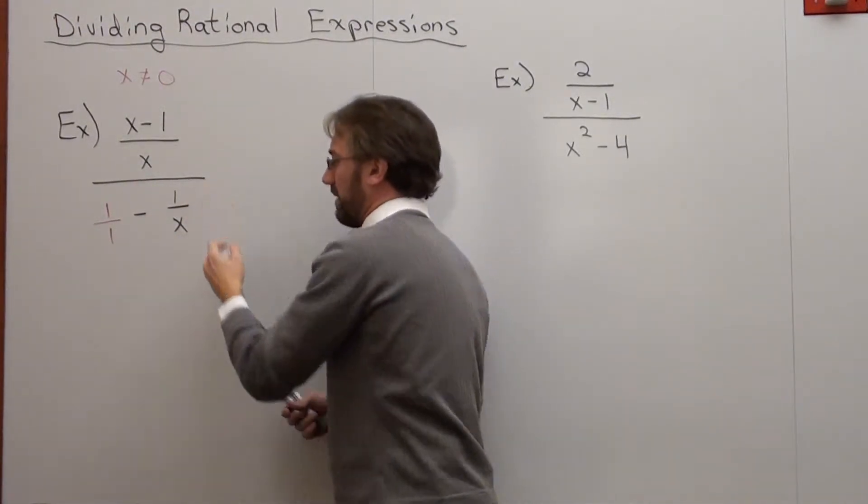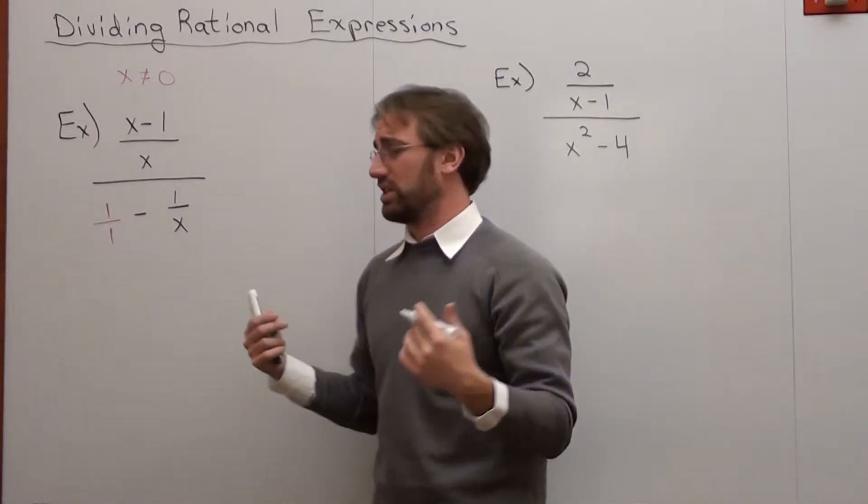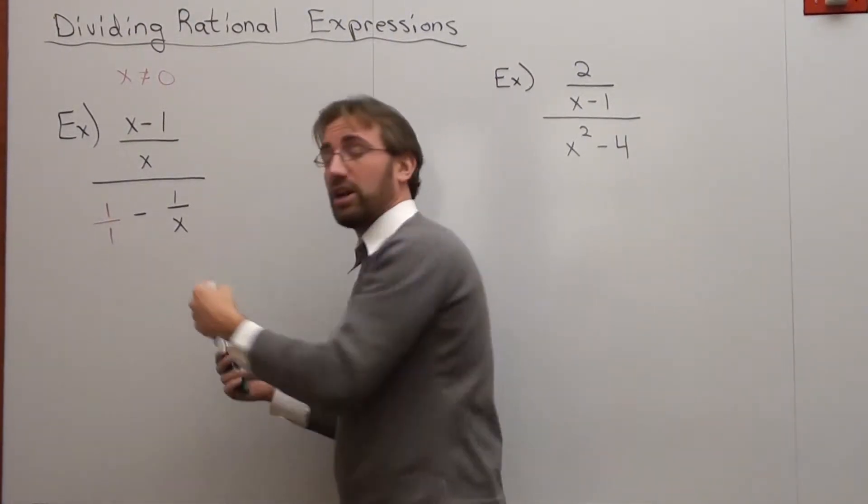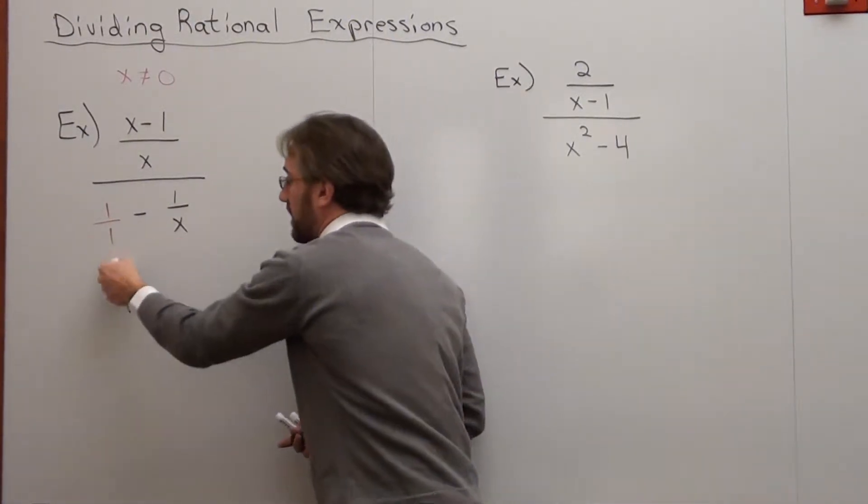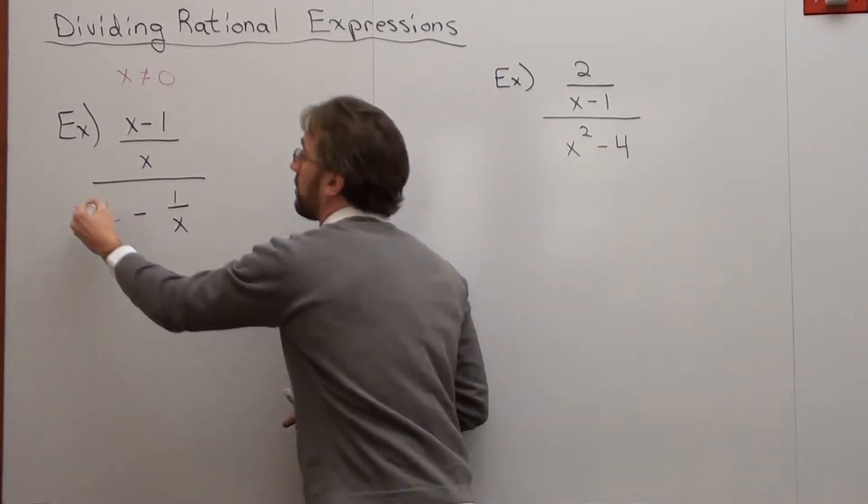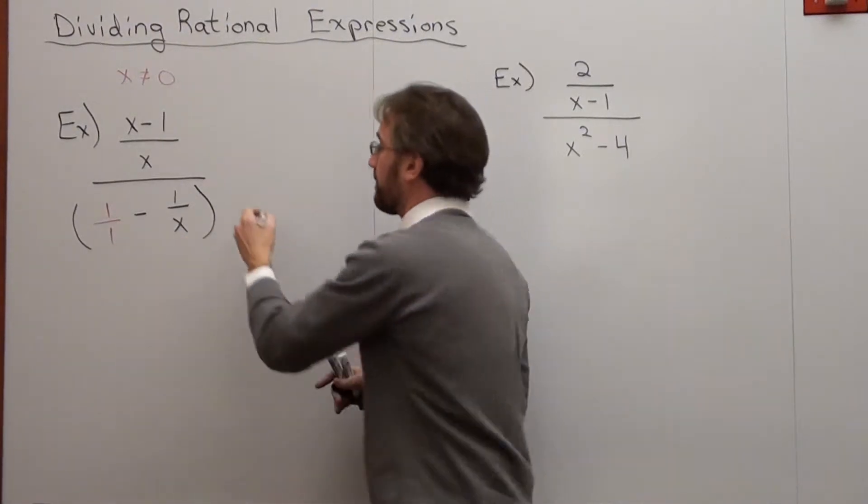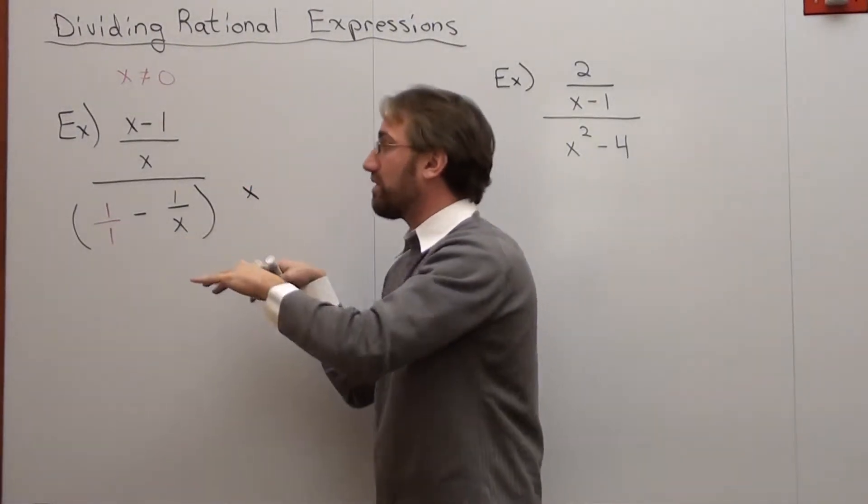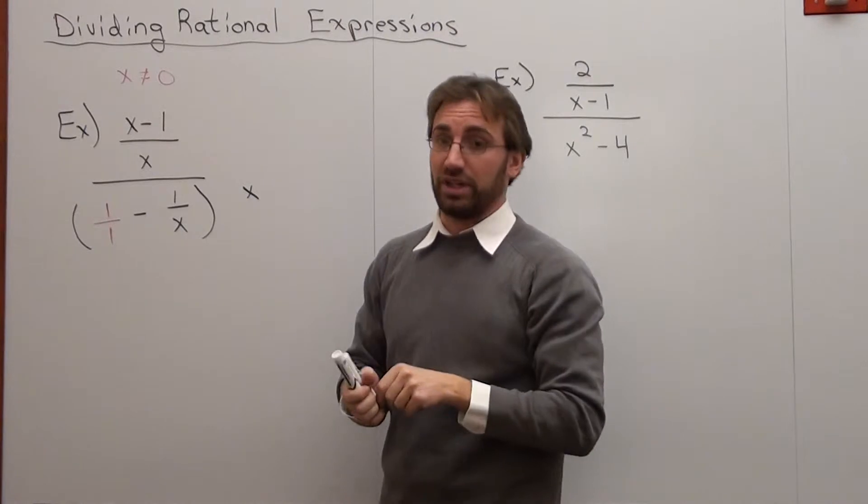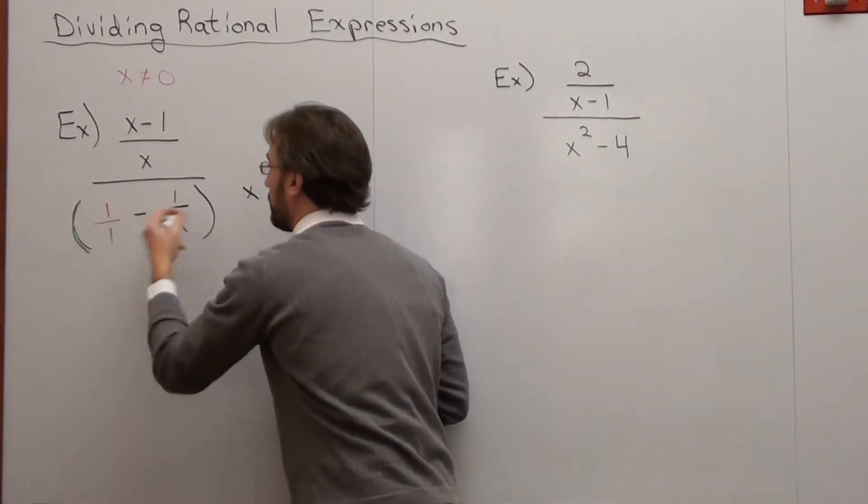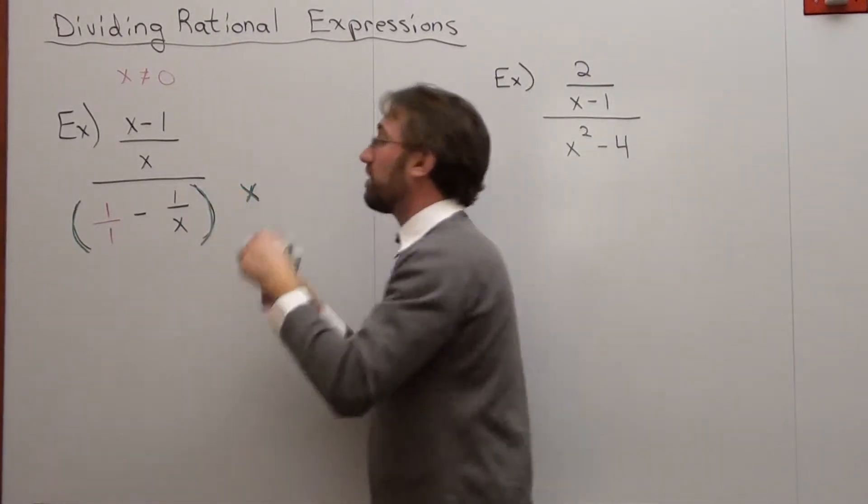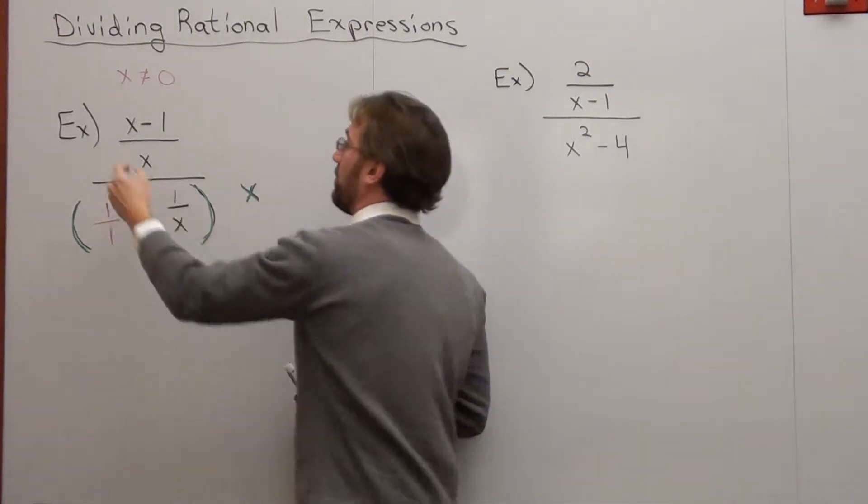So in order to do that, I'm going to say, well, what's my LCD? What's my LCM? Oh, it's very simple. It's just all your denominators multiplied together. x times 1 is x. So what I'm going to do is I'm going to multiply this whole fraction here by x. But what I do on the bottom of a fraction, I better do on the top of a fraction.